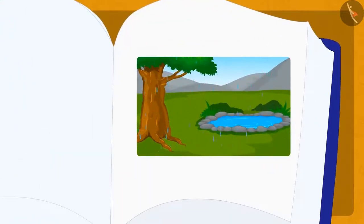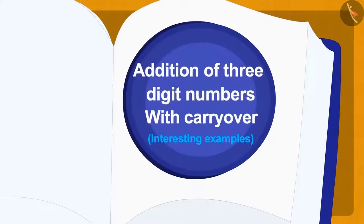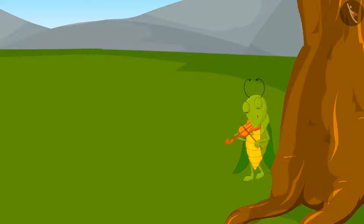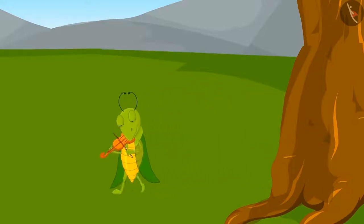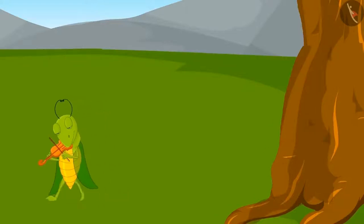Children, do you like the rainy season? Come, let us listen to a story of the rainy season. In this lesson, we'll see some interesting examples of addition of three-digit numbers. One day, Tinku the grasshopper was walking around playing the violin.